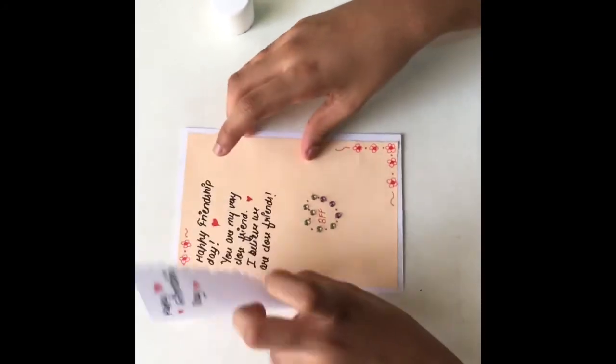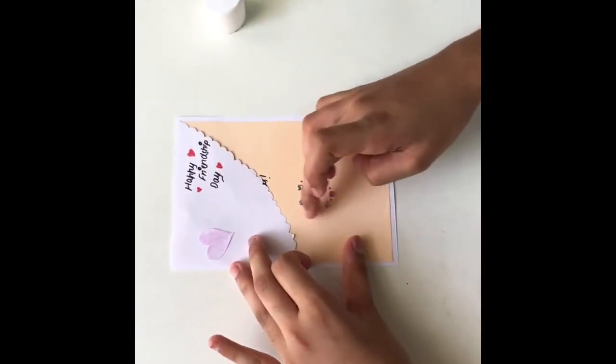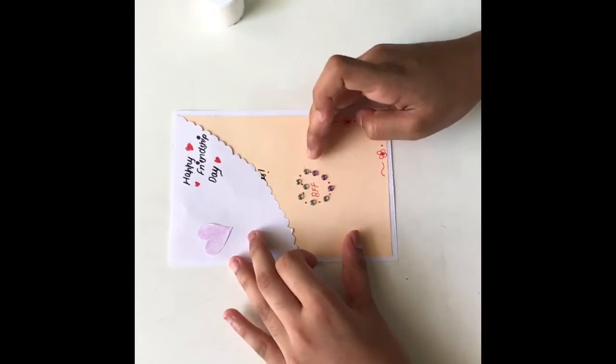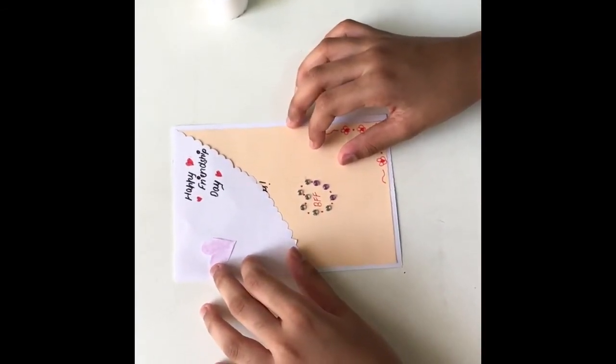Now your heart is ready. Take the glue and stick it. You can write something inside. I have wrote something for my best friend. Now stick some glitter stickers and write BFF. Your Friendship Day card is ready.